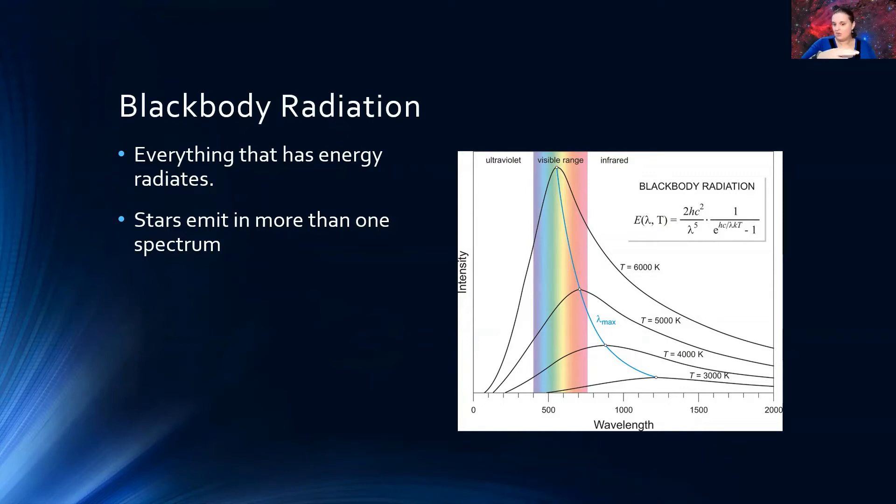And believe it or not stars emit in more than one spectrum. So here we are looking at a black body radiation like a perfect black body that emits out everything and at certain temperatures you can see peaks in the visible range as well as it's still visible in different ranges as well.